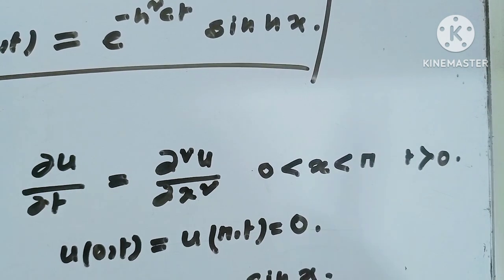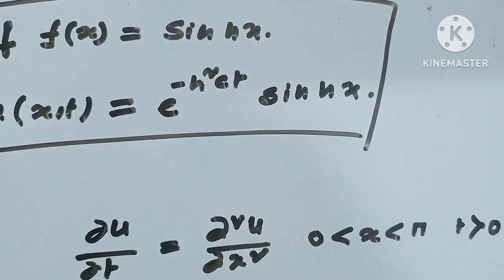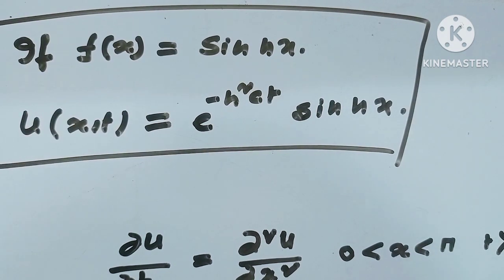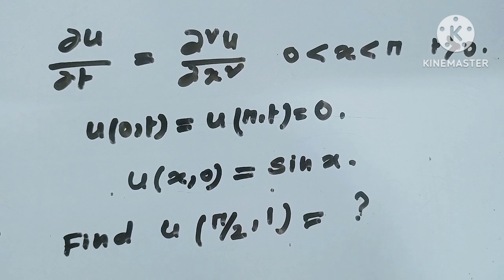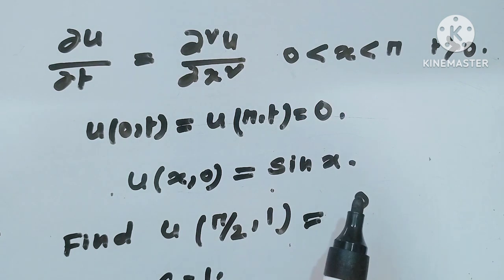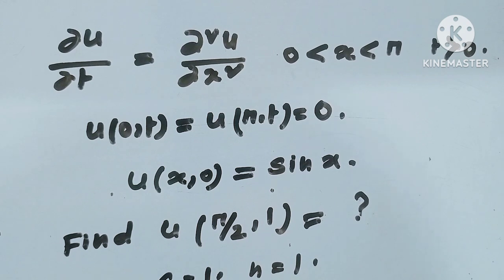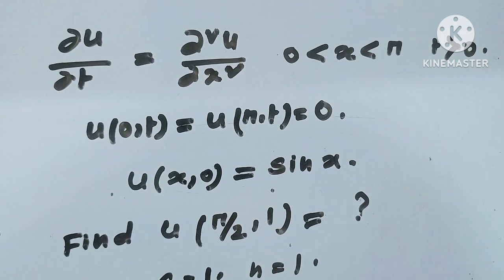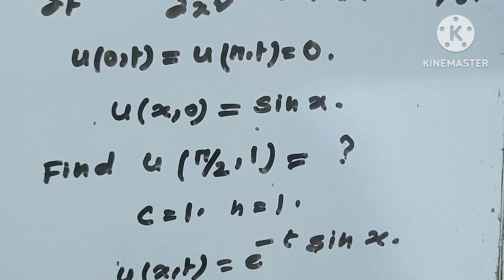I will solve this equation in 15 seconds. Since f(x) = sin(nx), the solution is u(x,t) = e^(−n²ct) * sin(nx). From the equation, notice c = 1. Given u(x,0) = sin(x), that means n = 1. So u(x,t) = e^(−n²t) = e^(−t) * sin(x), since n = 1. We have to find the value at (π/2, 1), so this value would be e^(−1) * sin(π/2).